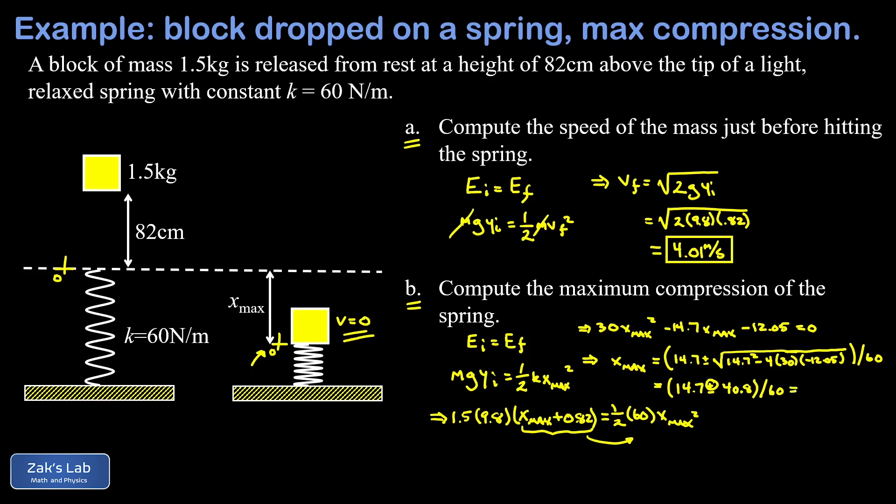So we take 14.7 plus 40.8 and then divide the result by 60, and this gives us about 0.924 meters. And I want to point out that I obtained that number by keeping all the precision in my calculator. If you round along the way, you're probably going to get 0.925.